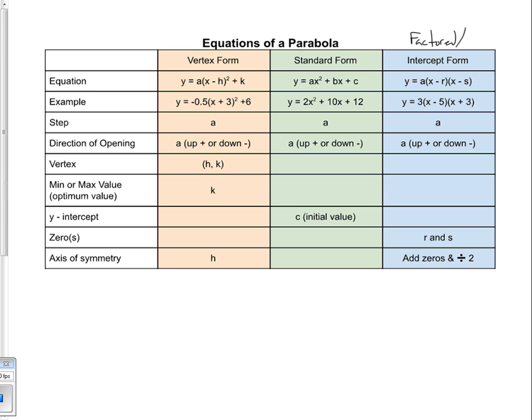The vertex form of the equation is y = a(x − h)² + k. From this form, the a value is given right away — in this example, the a value is negative 0.5. So we can determine the step value, and it also tells us whether the direction of opening is up or down. Because the a value is negative, we know the direction of opening is heading down for this particular example.